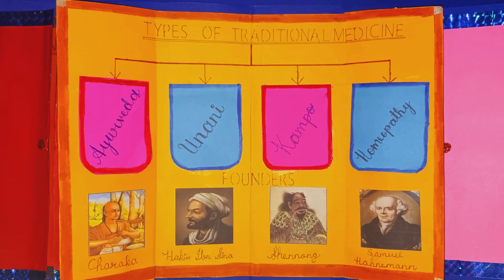Types of traditional medicine and their founders: Ayurveda — founder is Charaka. Yunani — founder is Hakeem Ibn Sina. Kampo — founder is Shennong. Homeopathy — founder is Samuel Hahnemann.